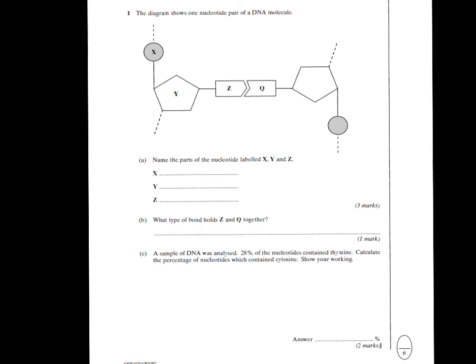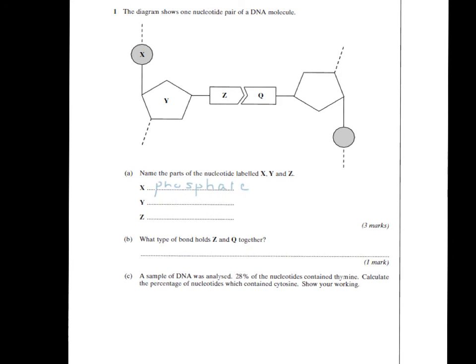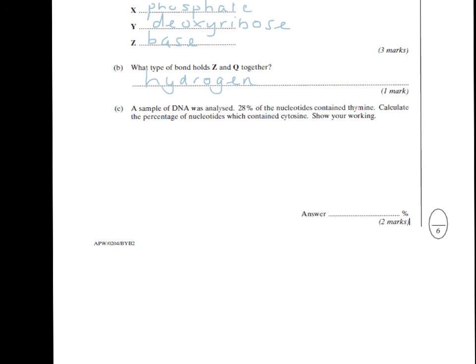This straightforward question asks you to identify parts of a DNA nucleotide. X is phosphate, Y is deoxyribose — note that 'pentose sugar' would not be accepted here because it specifically says a DNA molecule — and Z would be a base. The bond between the complementary bases are hydrogen bonds. For part C, we can use the complementary base pairing rules to work out the percentage of each of the different nucleotides in a sample of DNA.